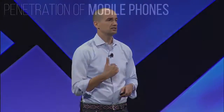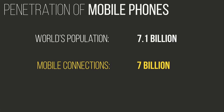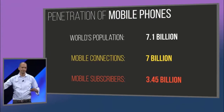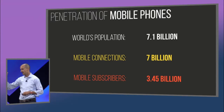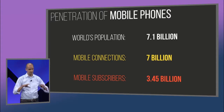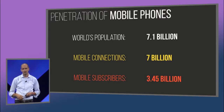Another example: penetration of mobile phones. There are 7.1 billion people living on this planet and 7 billion mobile phone connections — spread across 3.45 billion people. If you subtract people too young or too old to have a phone, and those at the very bottom of the poverty pyramid, we effectively have 100% cell phone penetration on this planet. It's staggering. Granted, these are dumb feature phones, but still.